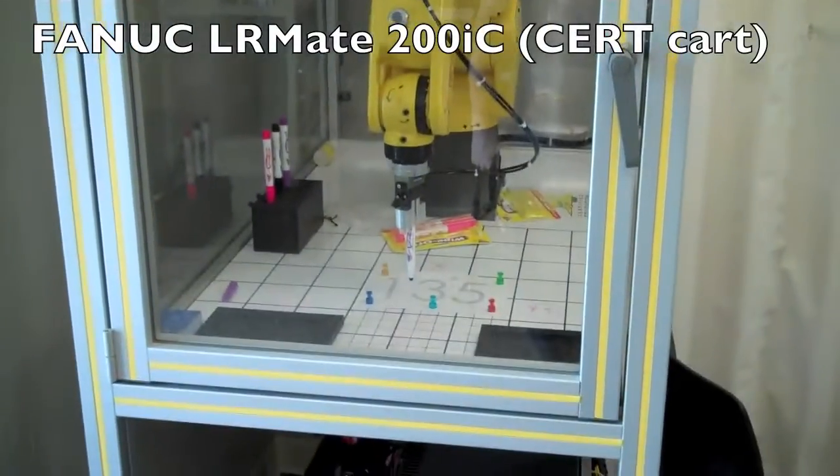Hi, my name is John. I'm here to show you today how we created a program to make this robot write one, three, and five on a piece of paper.